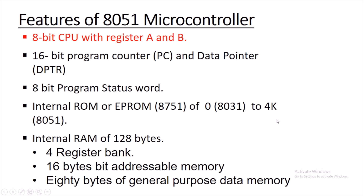The first feature of 8051 microcontroller is it has registers A and B. 8051 is having 34 general purpose registers. Out of 34 registers, 32 are arranged in 4 register banks, and in each register bank there are 8 registers R0 to R7, making 32 registers in total. The other 2 registers are registers A and B. Register A is the accumulator in which one of the operands is stored, and after arithmetic and logical operations, the result is also stored in register A.